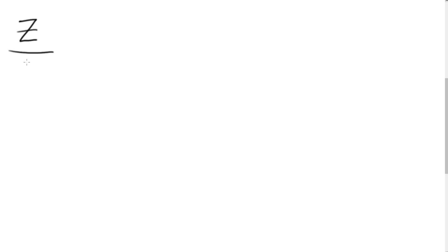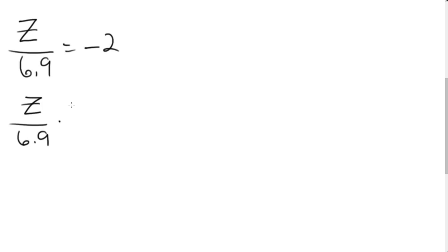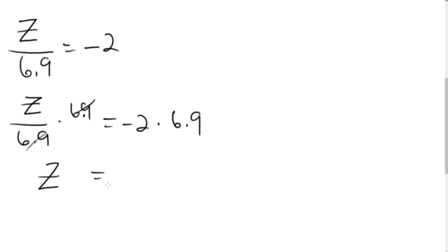Now let's look at division equations with decimals. For example, z over 6.9 equals negative 2. My thought process: I multiply both sides by 6.9 to isolate z. These cancel on the left, leaving z. On the right, negative 2 times 6.9: I know 2 times 6.9 is 13.8, and multiplying a positive and a negative gives a negative, so z equals negative 13.8.